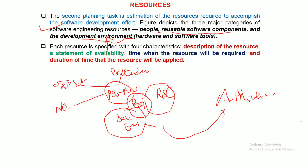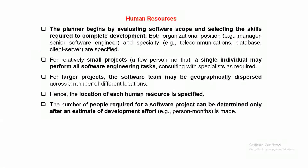So resources can be a living resource — a developer, a manager — or it can be related to hardware and software tools, or to programs already developed that are available. Resource planning and properly estimating resources is very important for success. Planning begins by evaluating the software scope and selecting the skills required to complete the development.